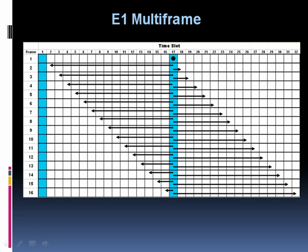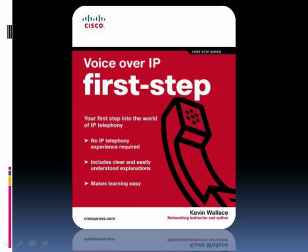We've now talked about a lot of digital theory — let's make this practical. Let's go out and take a look at how to configure a T1 voice port for both CAS channel-associated signaling operation and for ISDN common channel signaling operation. The graphics in this presentation were adapted from a book I wrote for Cisco Press. If you found this discussion interesting and want to read more about digital signaling theory and voice sampling, check out my Voice over IP First Step book from Cisco Press. Now let's go out to the live interface.